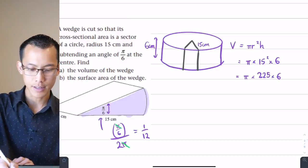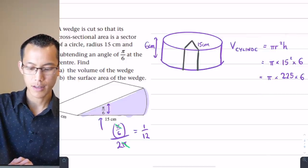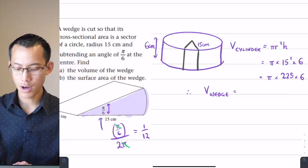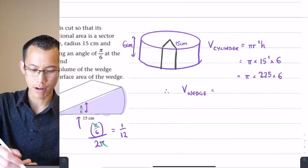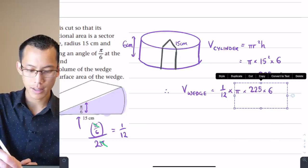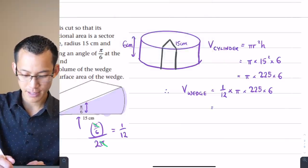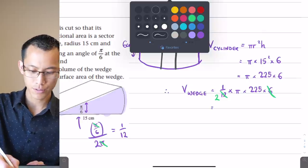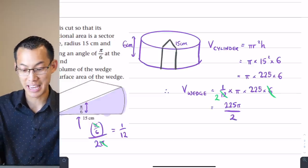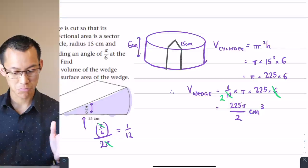So therefore, I can go over and say the volume of the wedge is going to be 1/12 of the volume of that cylinder. So it's going to be 1/12 times this. So you can see here, this actually is a little bit helpful to me because some stuff is going to cancel. That 12, I can take out a factor of six, which cancels over here, leaves me with two. So now I just have 225π/2. Doesn't cancel any further. That in what units? Centimeters cubed. That is the volume of my wedge. So I'm done.